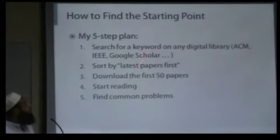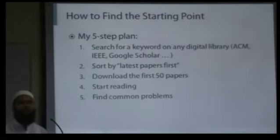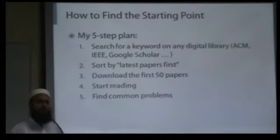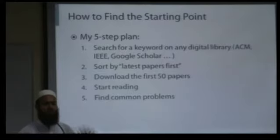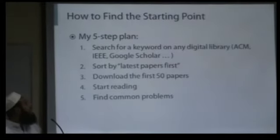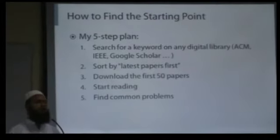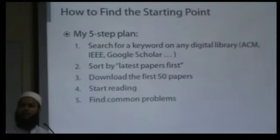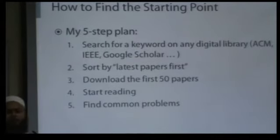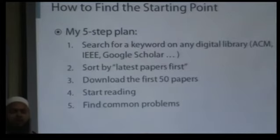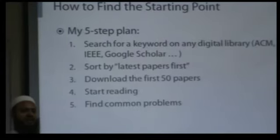Step one: search for a keyword on any digital library — ACM, IEEE, Google Scholar, whatever gives you access to papers. Search on a keyword that interests you or something you want to work on. Sort by the latest papers first and download the first 50 papers — 50 is the holy grail, the minimum. Start reading those papers and figure out the commonalities. You will almost always find commonalities across the 50 latest papers in the same domain.